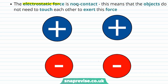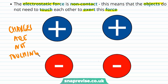The electrostatic force is non-contact, and this means that the objects do not need to touch each other to exert this force. So the charges are not touching, and yet they still experience this electrostatic force moving them either towards each other or away from each other.